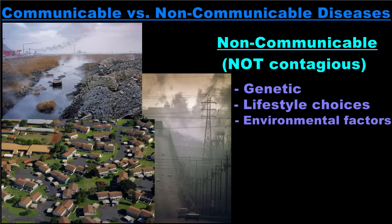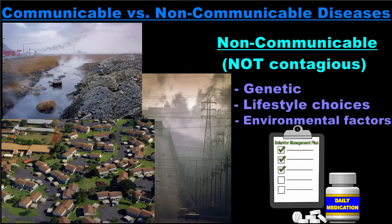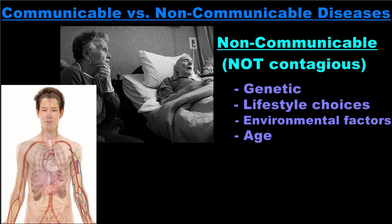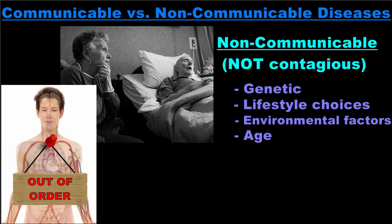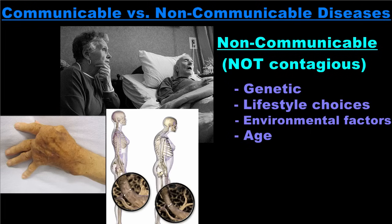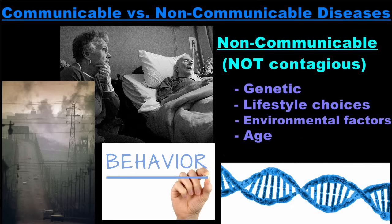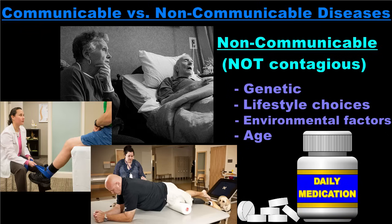Diseases caused by environmental factors often become chronic conditions that an individual will have to manage for extended periods of time with medications or other treatments. The last cause of non-communicable diseases is age. As a person ages, body systems and organs can wear out over time and begin to fail. Non-communicable diseases related to age are called degenerative diseases and include arthritis, osteoporosis, and glaucoma, among others. Some of these diseases have environmental, genetic, and behavioral factors that contribute to their development as well. Treatment of degenerative diseases may involve daily medication regimens, pain management, or physical therapy.